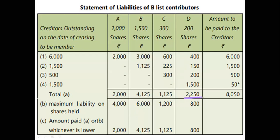If you have D, you can make 200 shares. If you have 4 rupees, you can make 800. If you have liability, you can make 2250. If you have any company, you can make 800 rupees. The company cannot demand more than the face value.